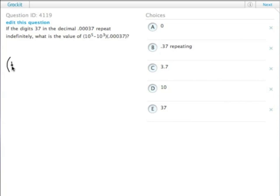So we have 10 to the fifth minus 10 to the third, and then we have 0.00037 repeating, multiplied out.